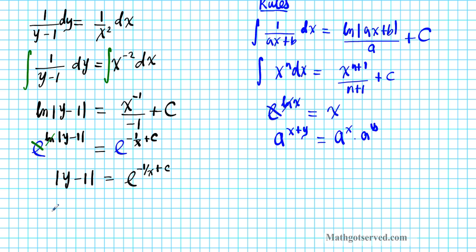The absolute value can be written as plus or minus, so Y minus 1 equals plus or minus E to the negative 1 over X plus C. We can also break down the right side using the product of powers property of exponents, writing this as E to the negative 1 over X times E to the C, since when you multiply exponents with the same base you add the powers.